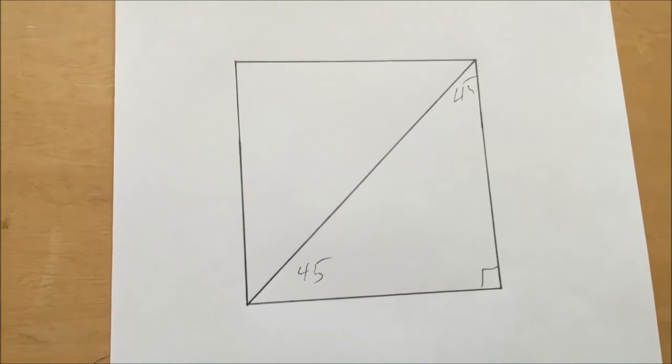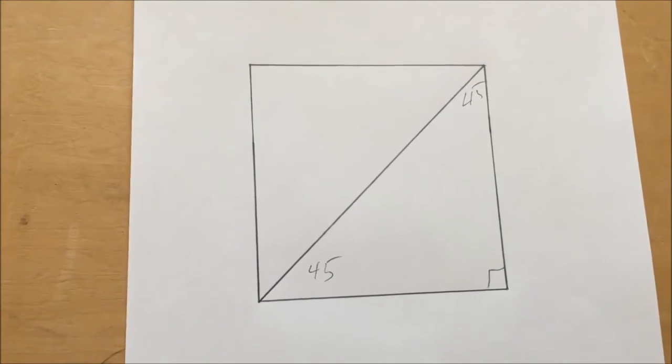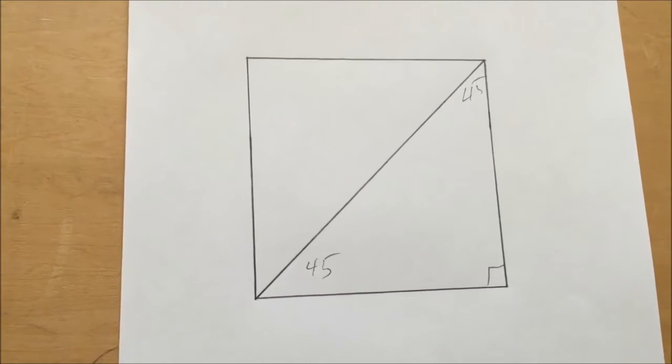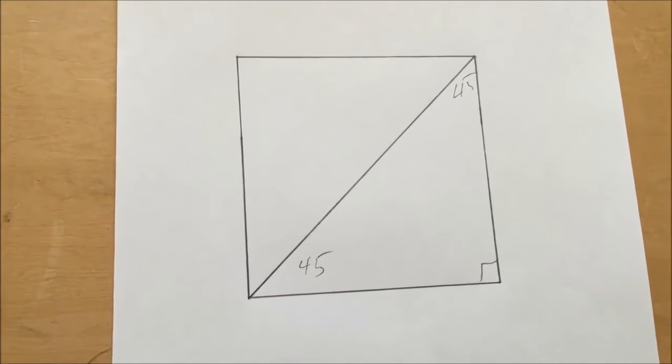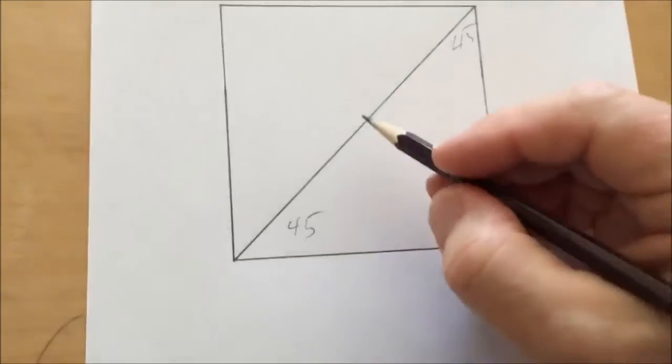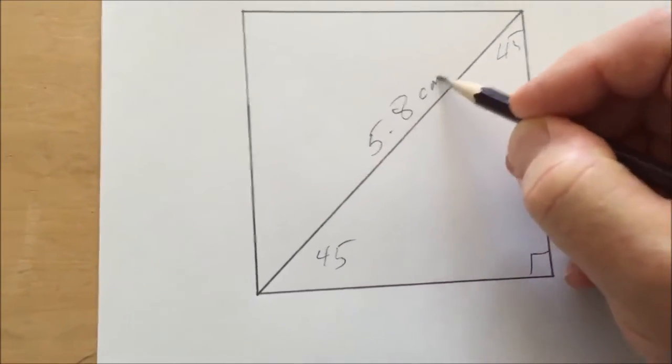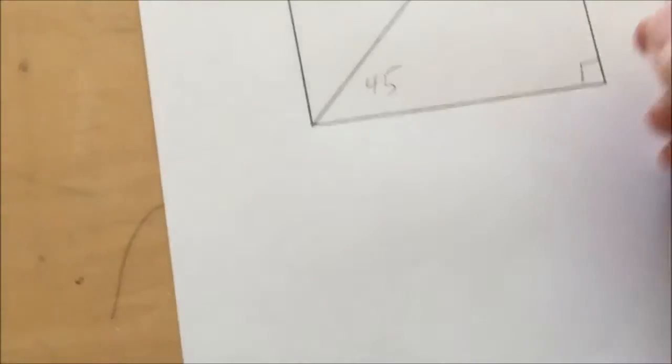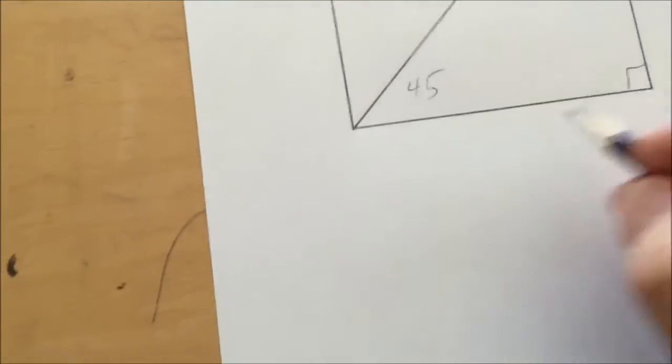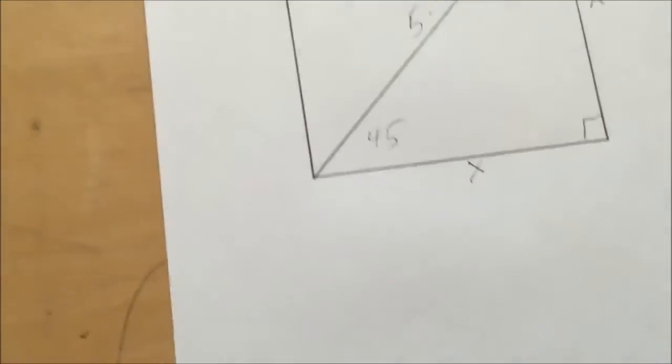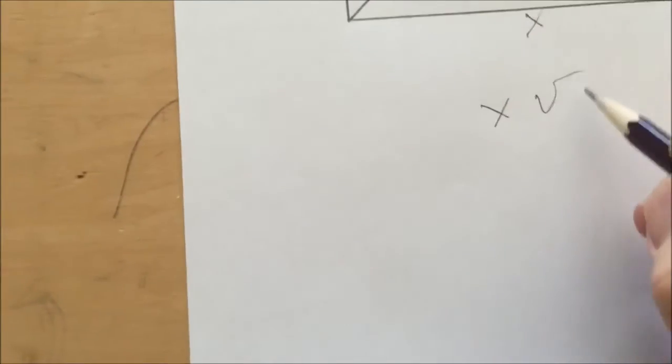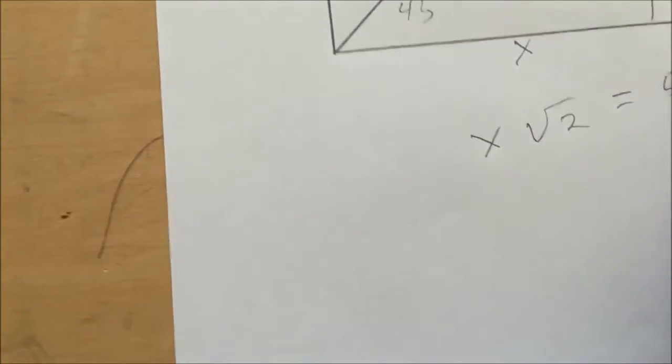The edge length of the tetrahedron is 5.6 cm. Since the cube wraps around the tetrahedron, add 2 mm due to working with cardboard to get 5.8 cm edge length for the tetrahedron. If we call each edge of the cube x, we know that x times radical 2 is equal to 5.8.